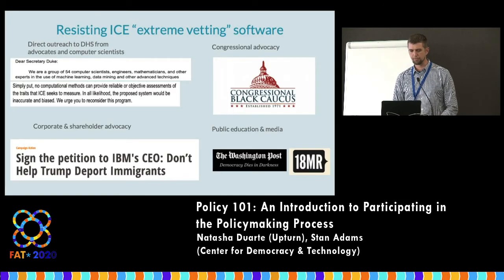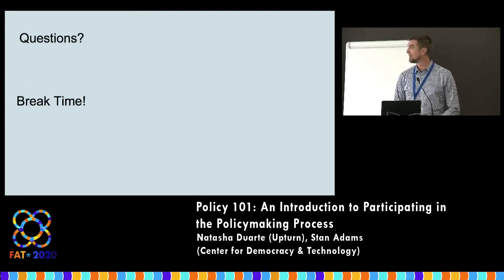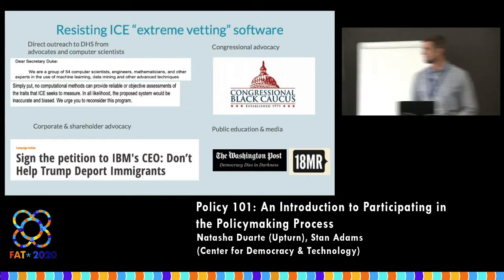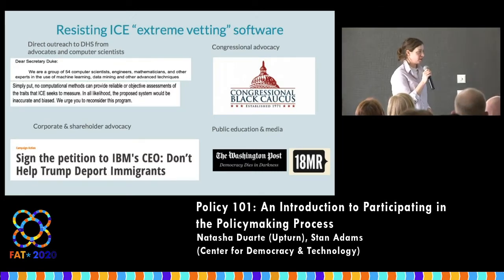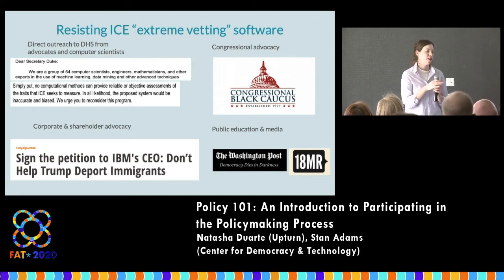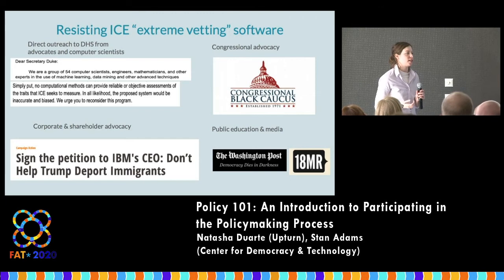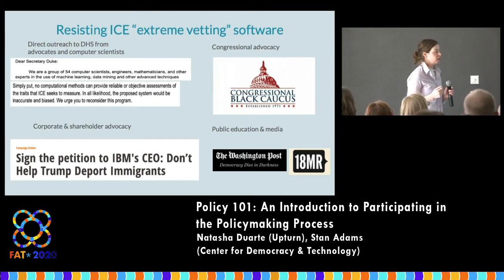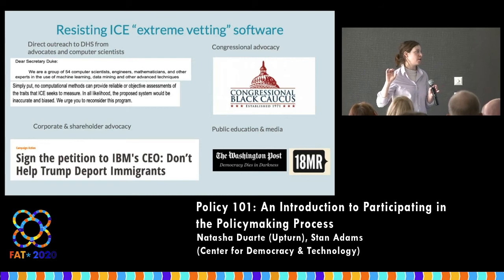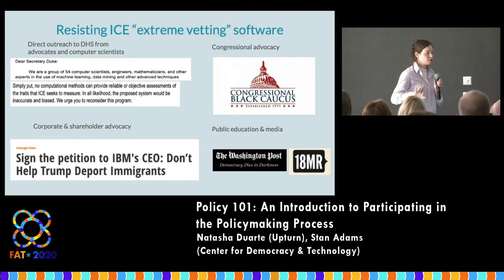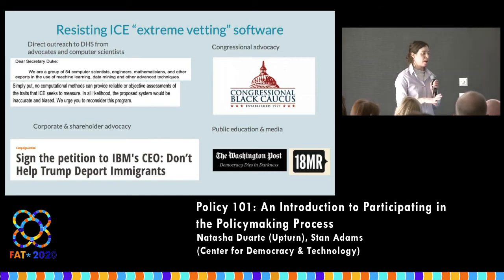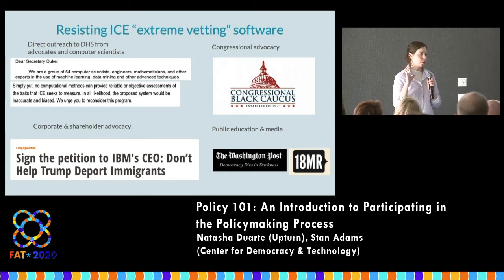These are the major elements of the ICE advocacy effort — basically an example of finding out something that's going on through procurement documents, then partnering with a large coalition and having a very multi-pronged strategy: a congressional strategy, a communication strategy, a corporate pressure and advocacy strategy, and involving computer scientists in explaining why the use of technology here was misguided. This was ultimately trying to stop ICE from purchasing tools that would vet visa applicants to the U.S. based on their social media and other internet information to decide whether they would be positively contributing members of society.